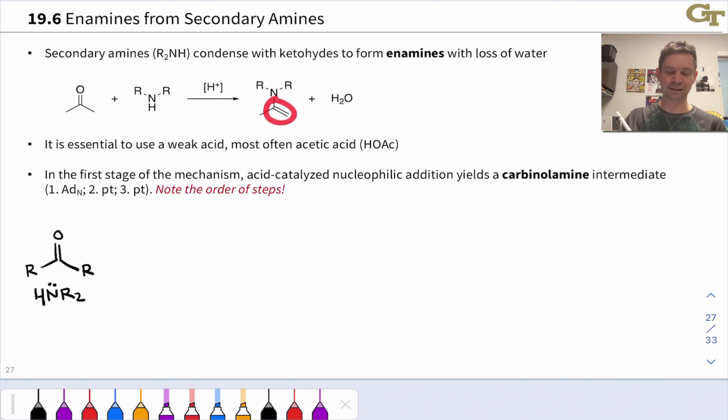It's called an enamine because it's got an alkene connected directly to an amino group. Enamine is the product here, and like the imine condensation, a molecule of water is given off, so we can think of this as a kind of condensation reaction.